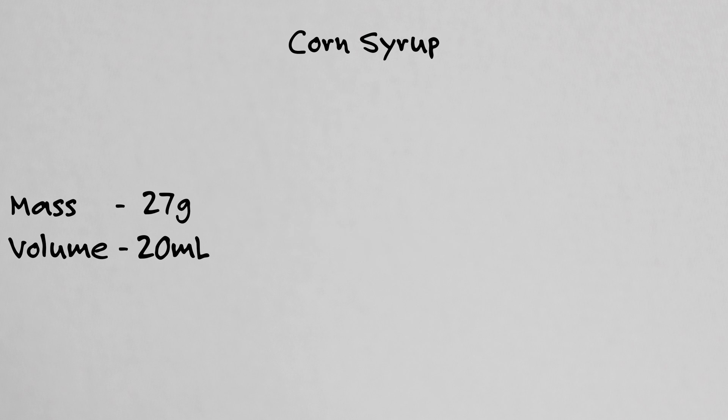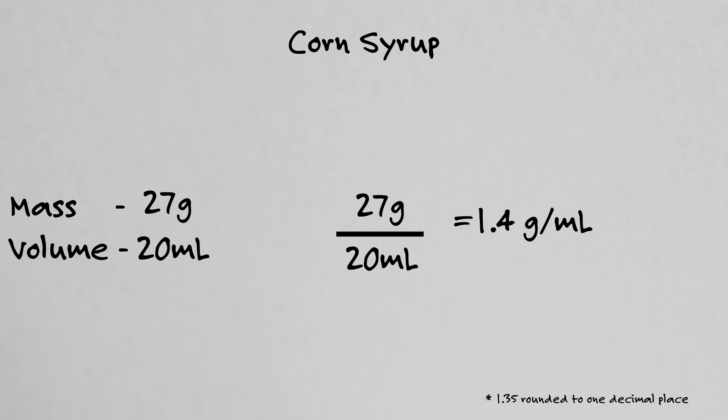To calculate density we take the mass of the syrup which is 27 grams and divide that by volume of 20 milliliters. We do the math and we get a resulting density of 1.4 grams per milliliter rounded to two significant figures. What that means is for every milliliter of volume I have 1.4 grams of corn syrup.